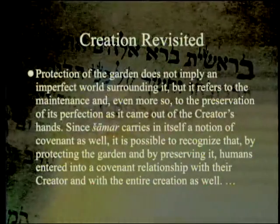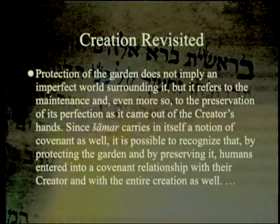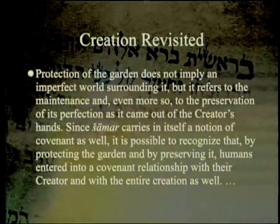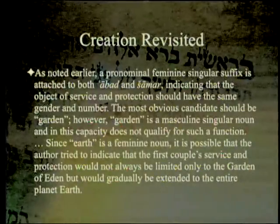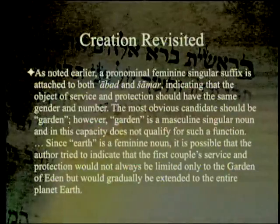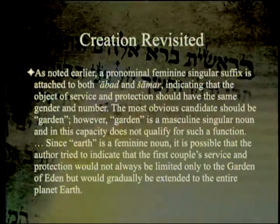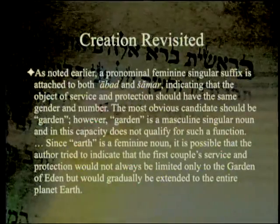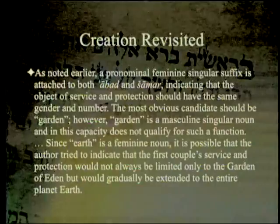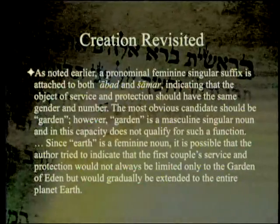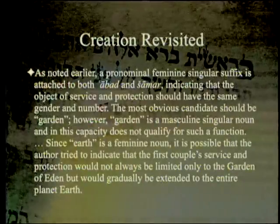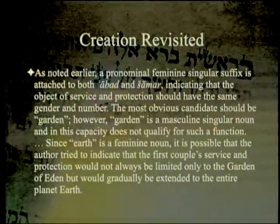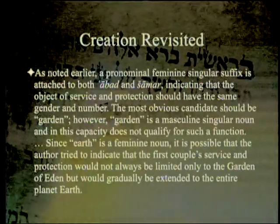Protection of the garden does not imply an imperfect world surrounding it, but refers to maintenance and even more so to the preservation of its perfection as it came out of the Creator's hands. Since 'shamar' carries in itself a notion of covenant as well, it is possible to recognize that by protecting and preserving the garden, humans entered into a covenant relationship with their Creator and with the entire creation. A pronominal feminine singular suffix is attached to both 'abad' and 'shamar' — since 'garden' is masculine, it may indicate the entire earth is the object of service and protection.